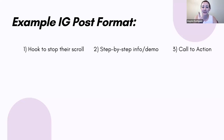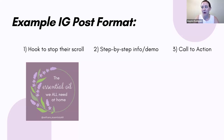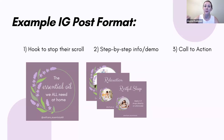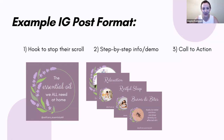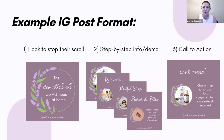What I normally do is make multiple images — the first one has to be a hook to stop the scroll, something like 'The essential oil we all need at home' or 'Stop doing this and try this instead.' As people swipe, they get little bits of information organized in a simple way — like here's the lavender essential oil, use it for relaxation this way, use it for restful sleep this way, use it for burns and bites this way. I break the information into small manageable chunks. At the very last square, I do a call to action: 'Chat with your authorized consultant,' 'Send me a direct message,' 'Like and follow for more.' Give them something to do.